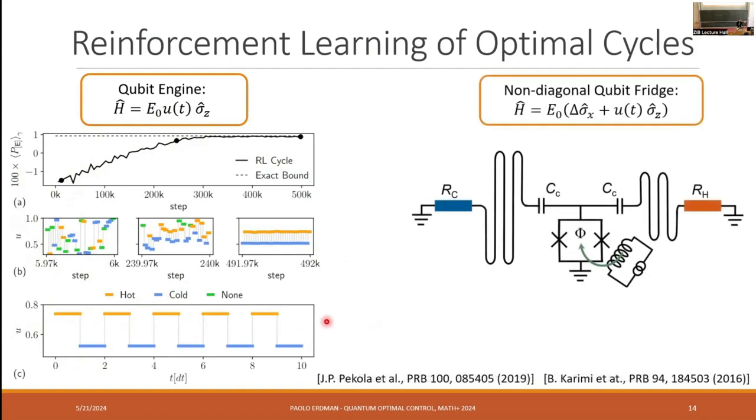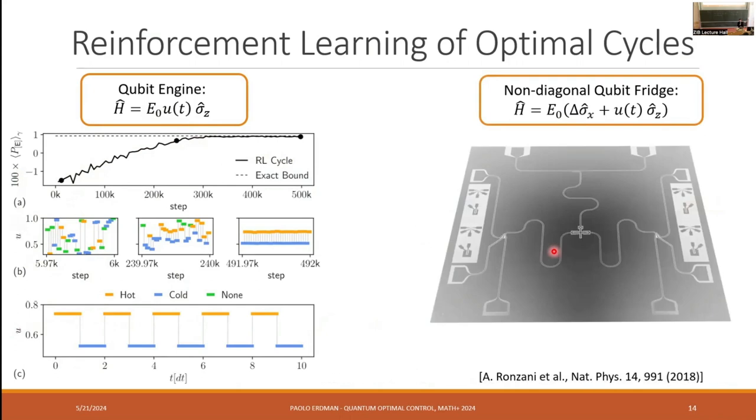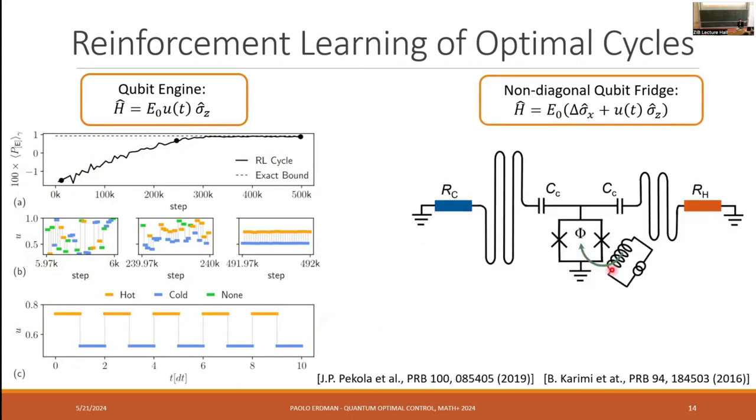So then we applied it to another system where we did not know the exact solution, which is this model of this device that I showed earlier. So here we have a transmon qubit, and our control this time is only over sigma z, and we have this constant term sigma x. So here when we change the control, we're also rotating the Hamiltonian, meaning that we will generate coherence in the instantaneous eigenbasis if we tune u of t. And here, so we're controlling the qubit in the center, which is coupled to these resistors, and our aim is to cool the cold resistor.